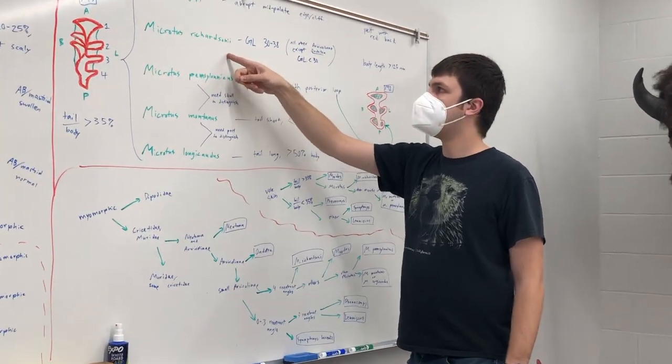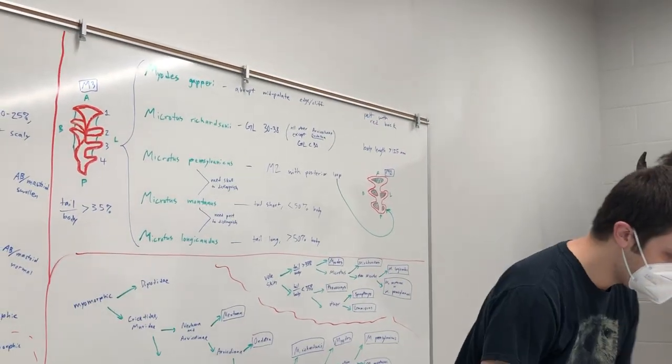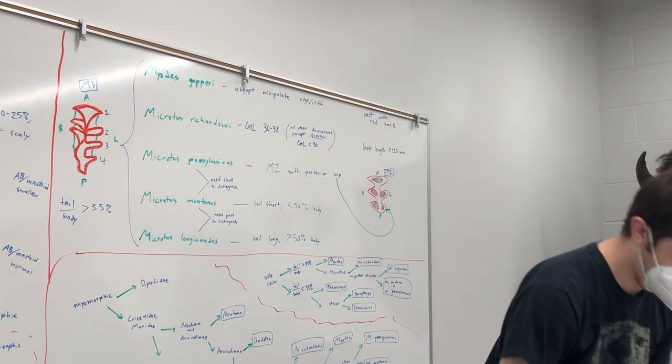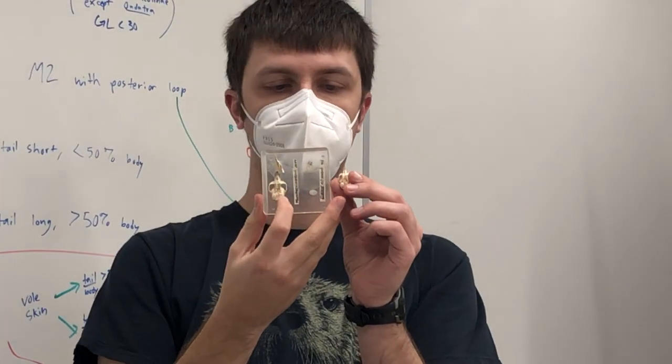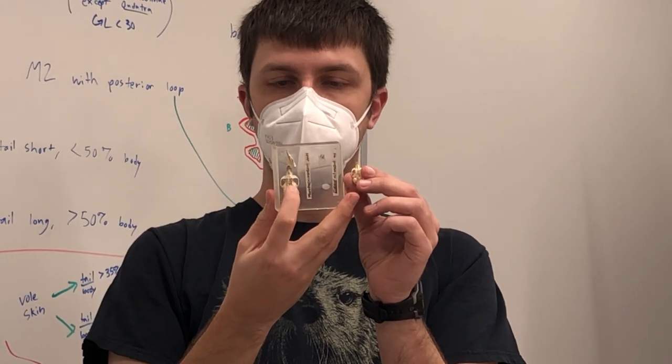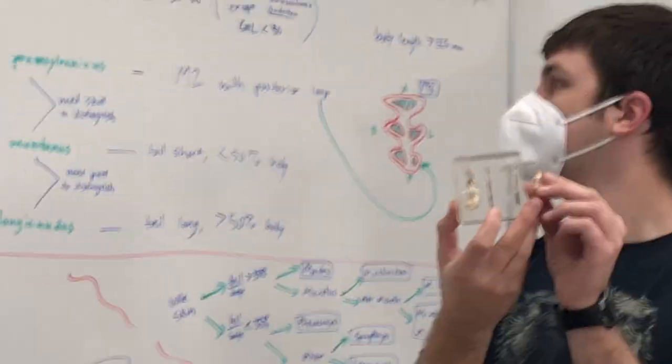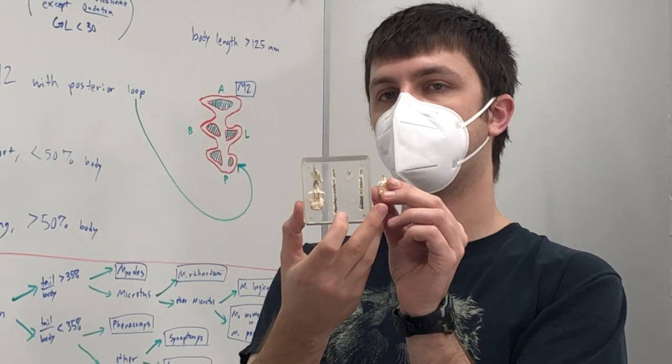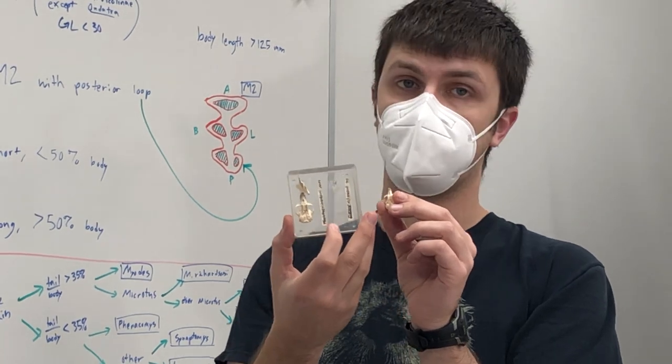Microtus richardsoni is the other easy one because it's so big. So here is a Microtus richardsoni skull in the glass case versus the Microtus richardsoni that's a regular size. This one here, Microtus richardsoni, is 30 to 38 millimeters for greatest length. All the regular other voles are less than 30.